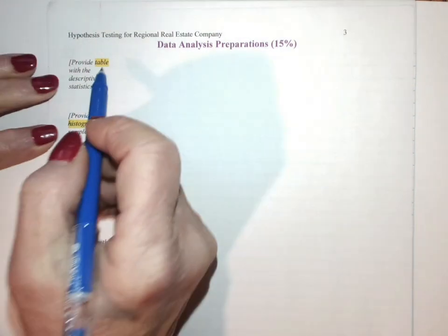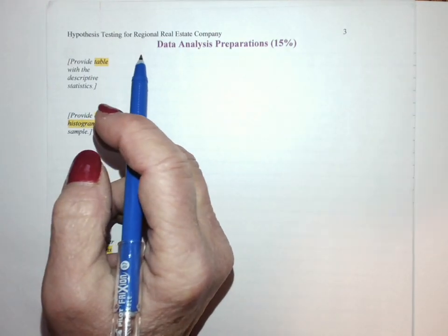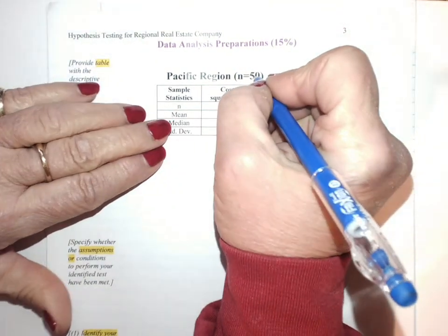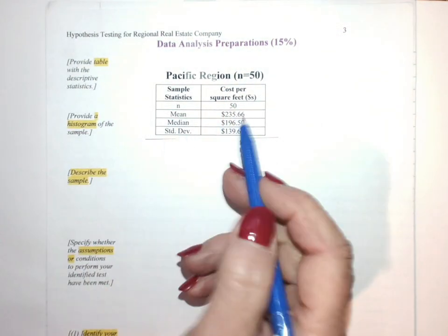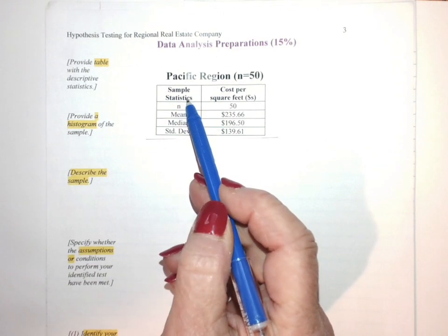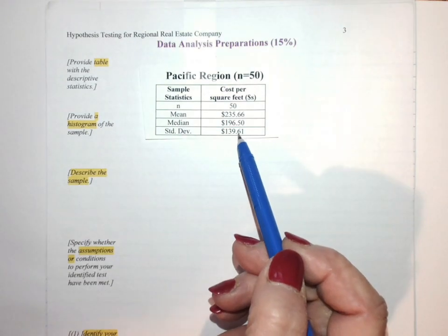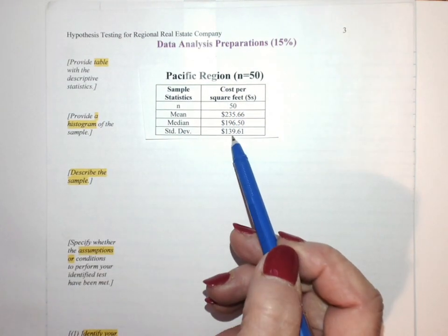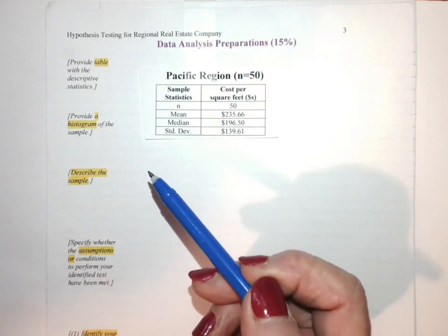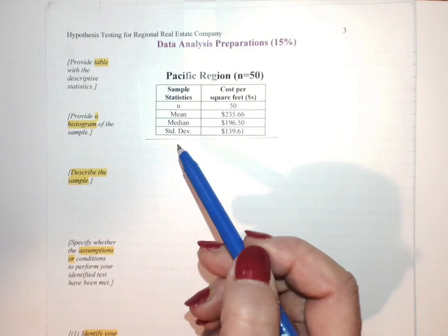Now we're doing the data analysis preparation, and they're asking us to do a lot of things here — this is 15% of your score. You want to provide a table with the descriptive statistics. Your sample is going to be 1,001. You want to make your table easy for the sales rep to understand. You are asked to provide sample statistics for the cost per square foot, and because we're doing dollars, it's nice to do it in dollars and cents. This is a very easy format to show your sample statistics: your mean, median, and standard deviation.